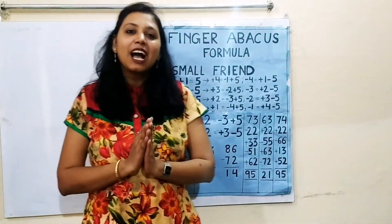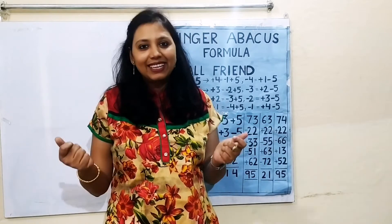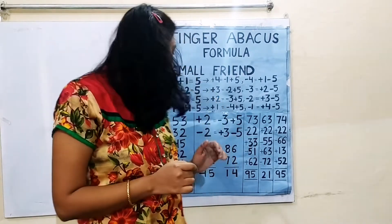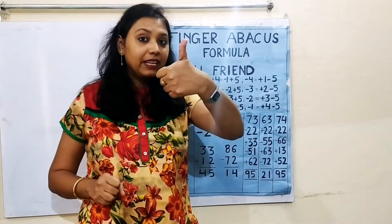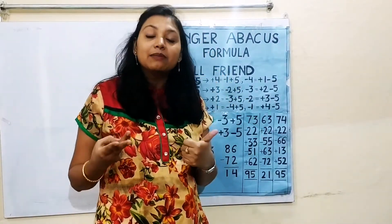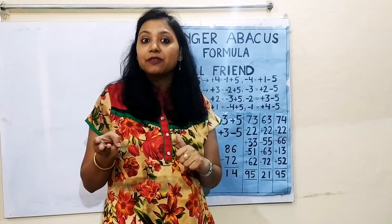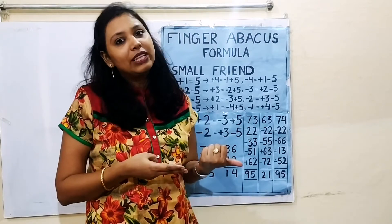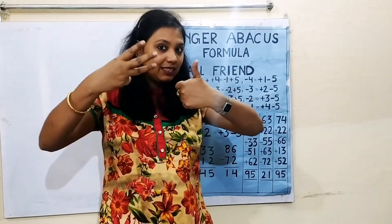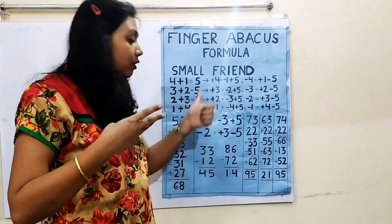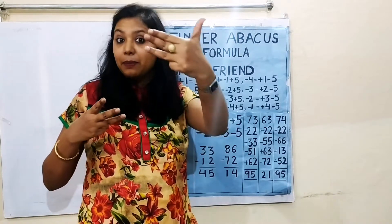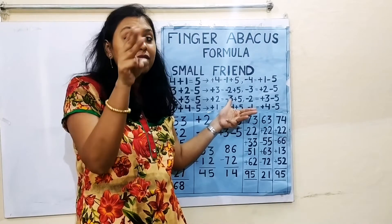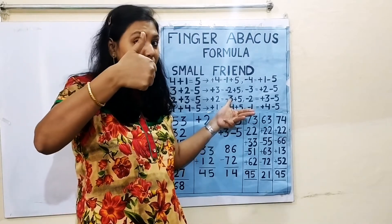Friends, have you seen how small children do these calculations so quickly? Now let us understand how we can do this. 53, plus 32: we add plus 30 and then plus 2. We have to use the formula for plus 2: minus 3 plus 5. Close 3 fingers and open the thumb.